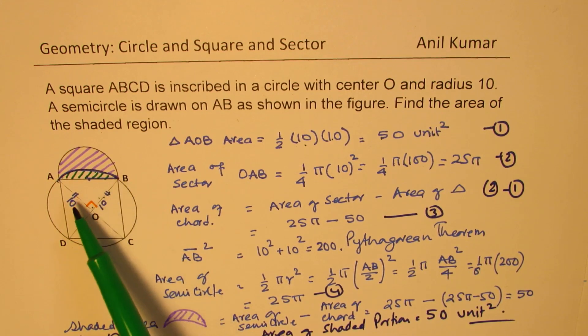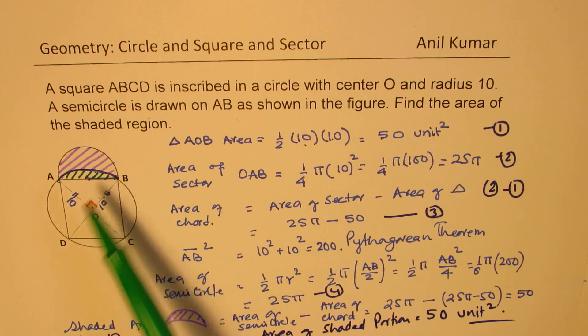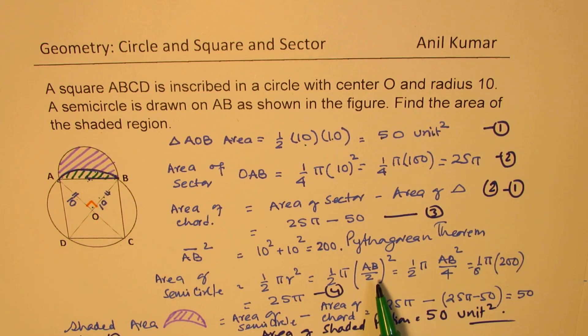We found AB by using Pythagorean theorem. 10² + 10² is AB². And then area of semicircle, we used half of this value of AB to find the area of the semicircle. From that, we subtracted the area of the chord to find the answer. Perfect. So that is how we solve this.